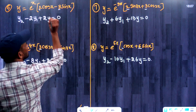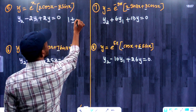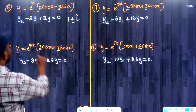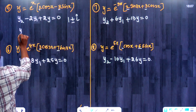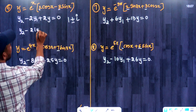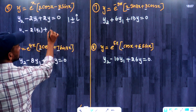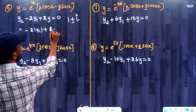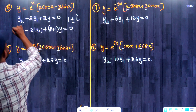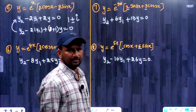Let us see the further answers. The roots here are 1 plus or minus iota. Our solution is y2 minus (1 plus 1) y1 plus (1 squared plus 1 squared) y equals 0, which is y2 minus 2y1 plus 2y equals 0. Quite easy.